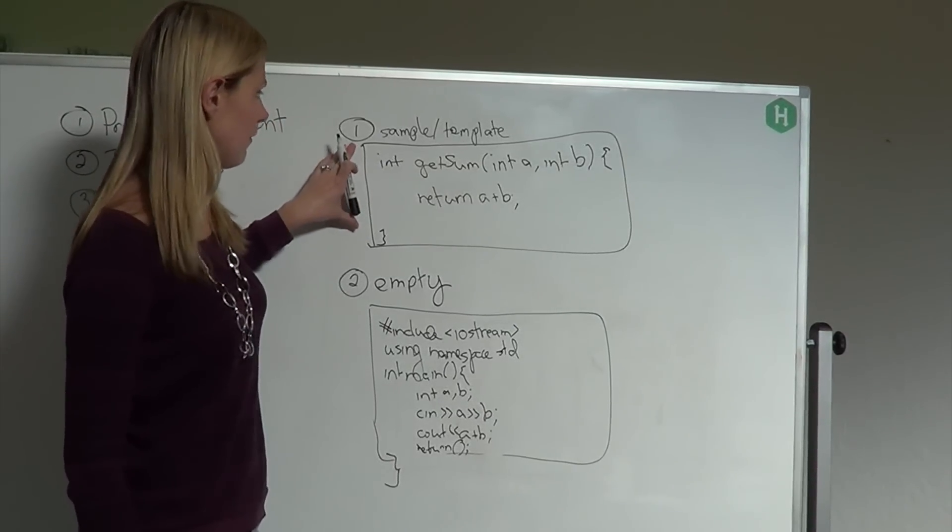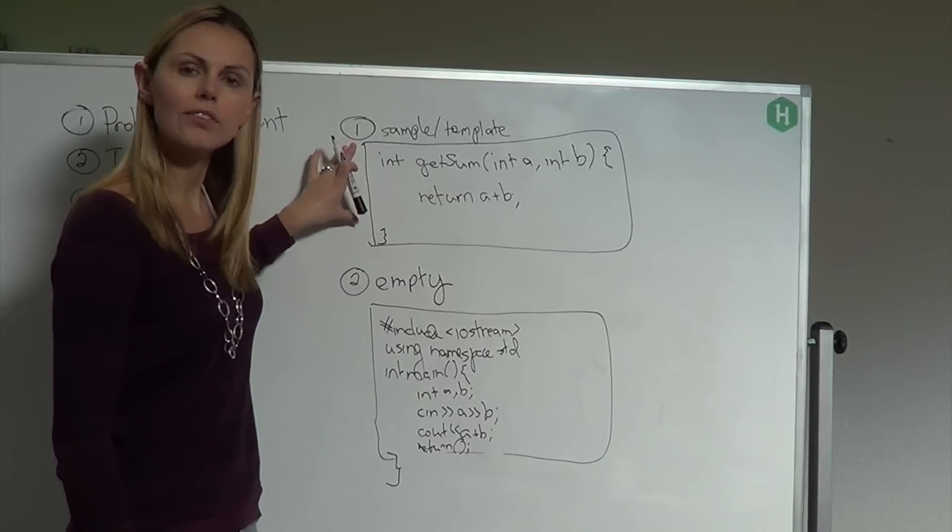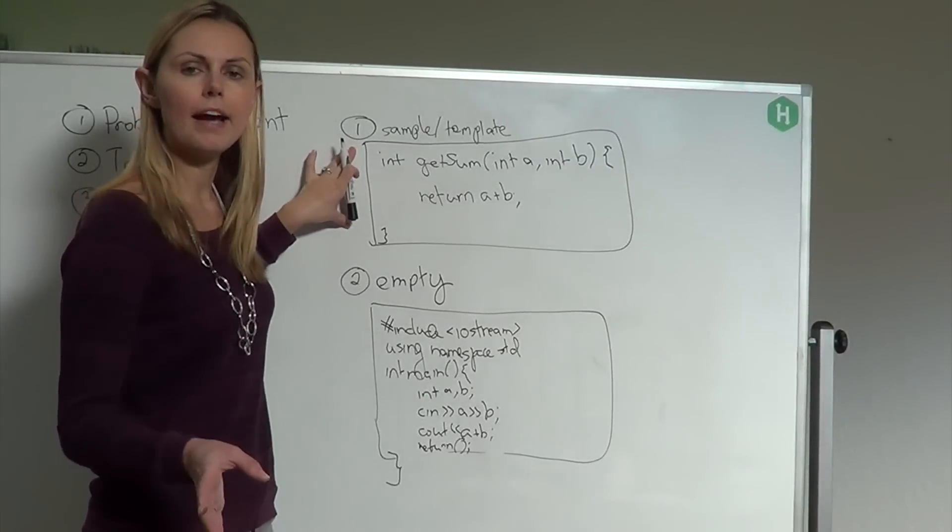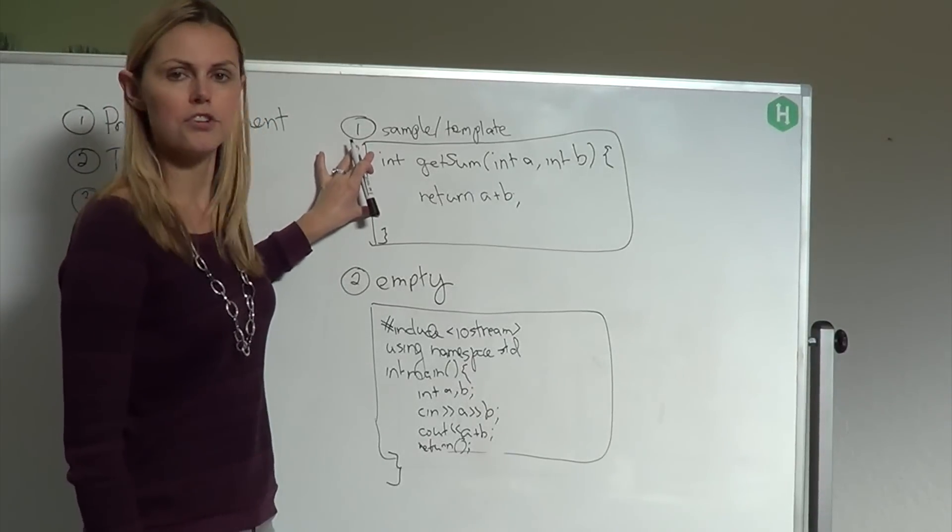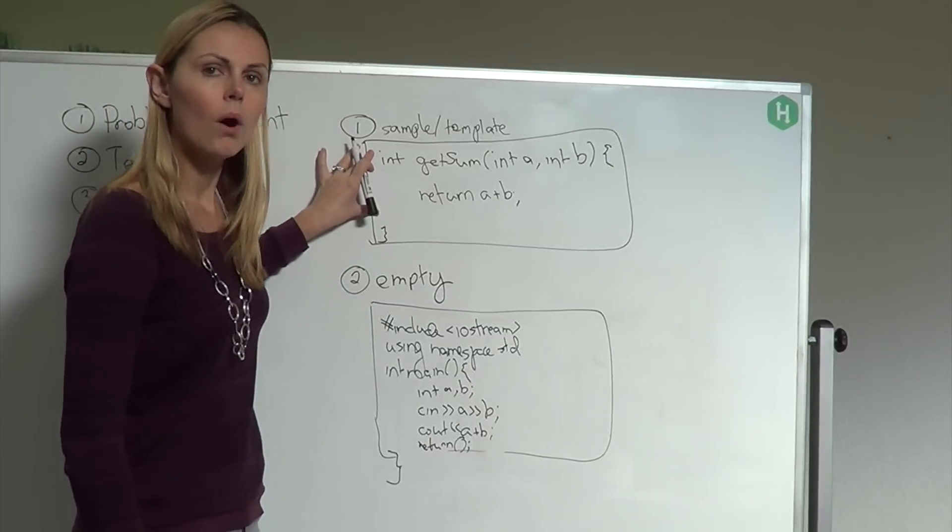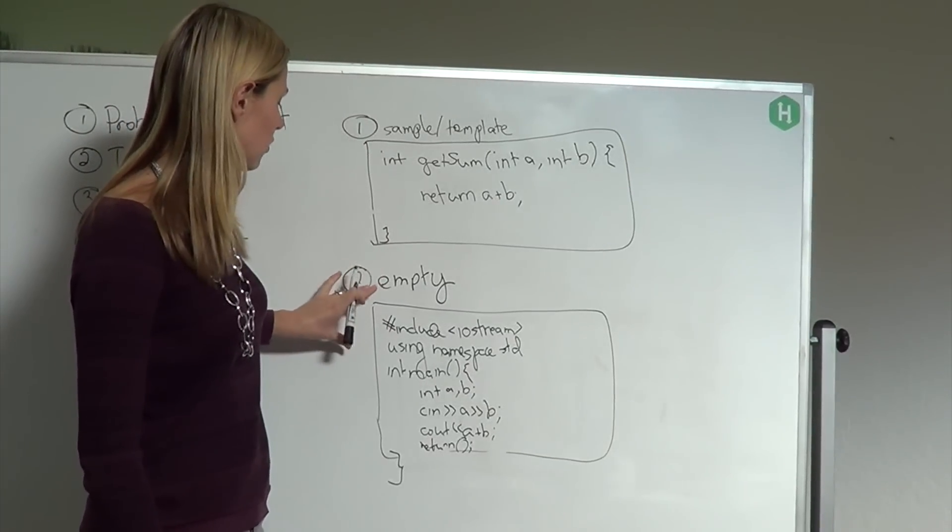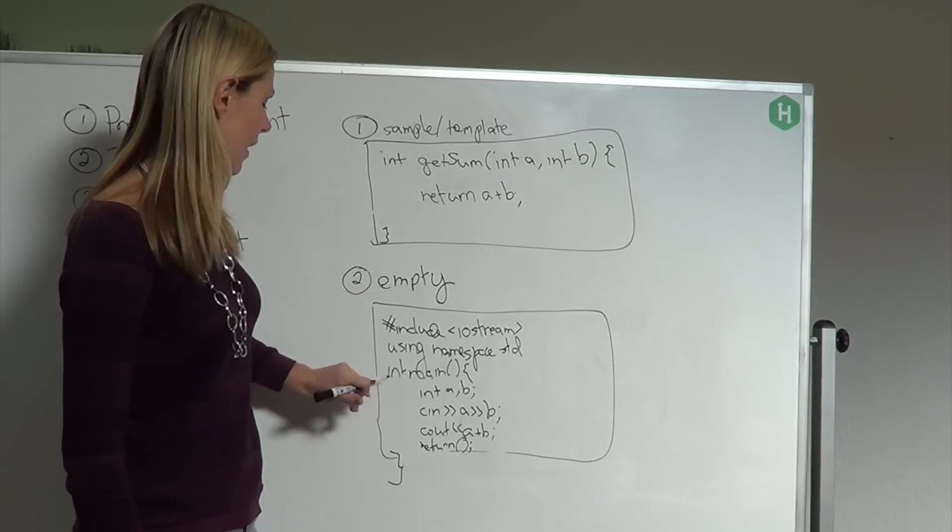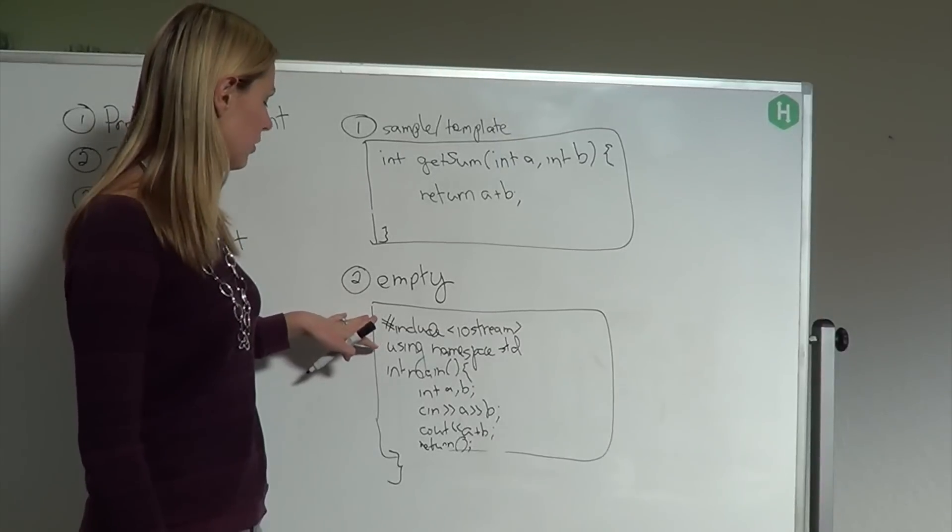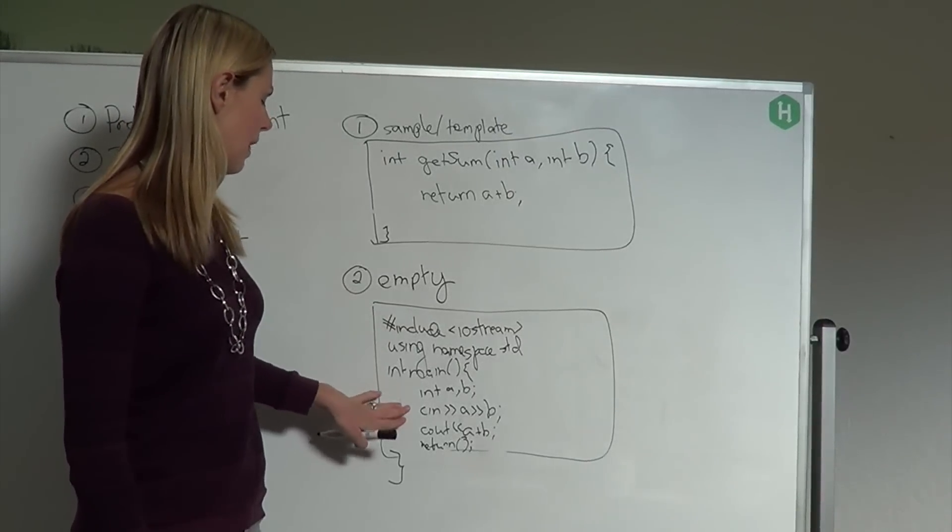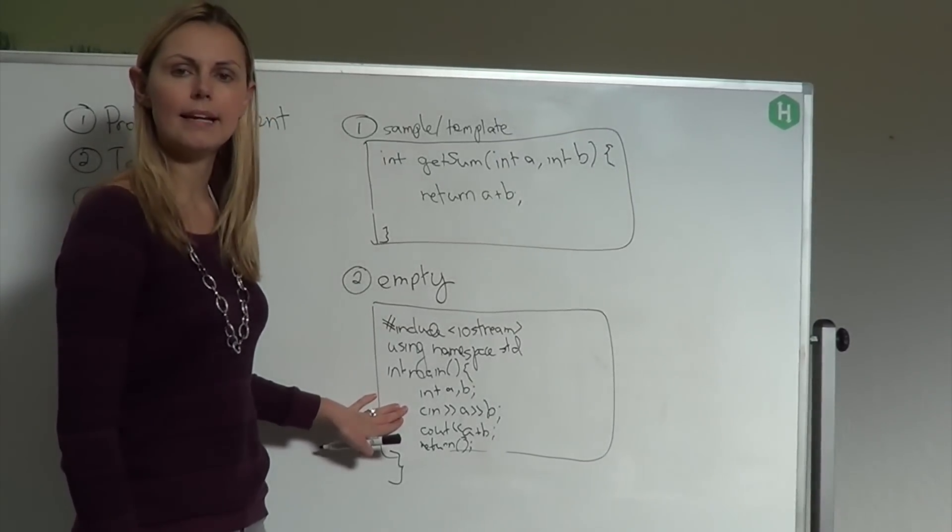So these are the two ways you have it. You have a sample template where you just fill in the code. In the background, HackerRank will actually execute this function across a bunch of test cases. Or you could have a totally empty window and you need to fill in everything. If you're working in C++, that's going to mean all the includes as well, your main function, and then you take your inputs using cin and cout.